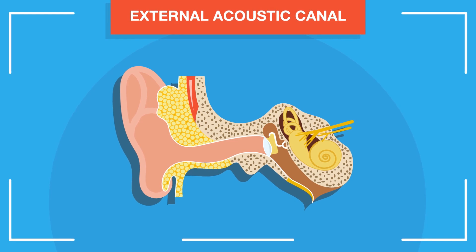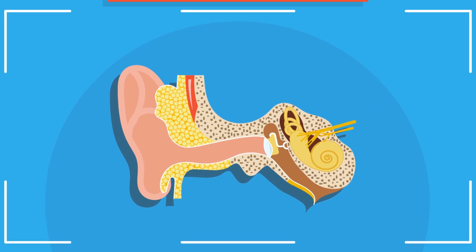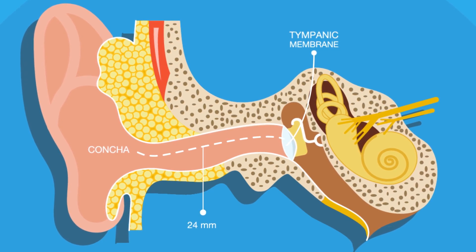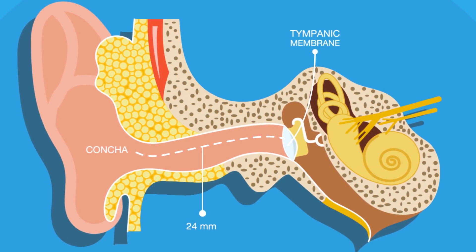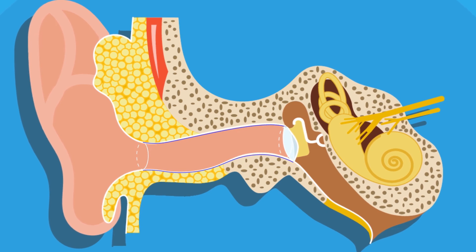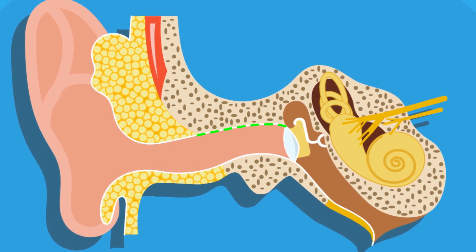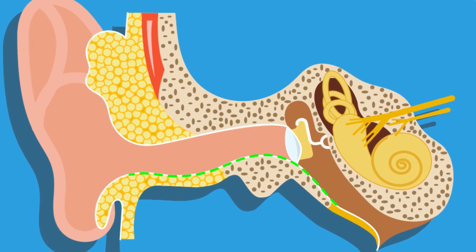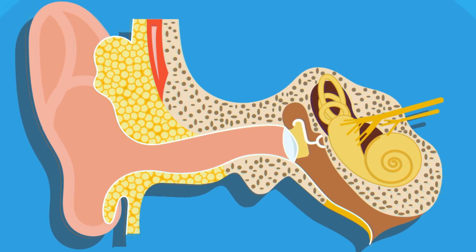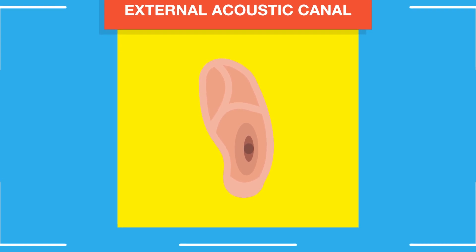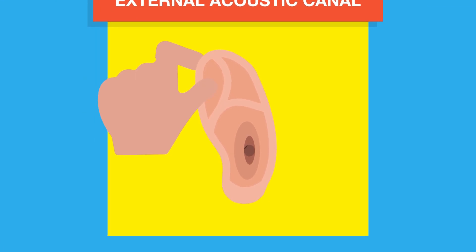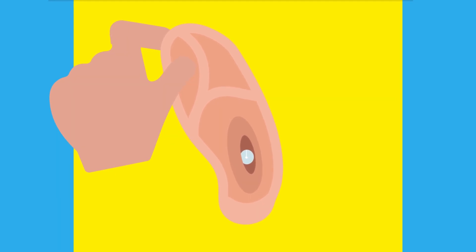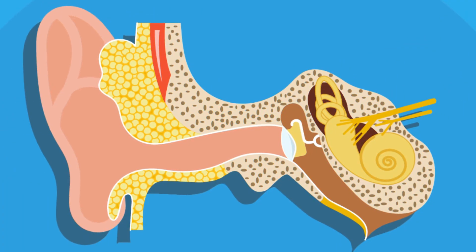The external acoustic auditory canal extends from the bottom of the concha to the tympanic membrane, and measures about 24 mm along its posterior wall. It is not a straight tube. Its outer part is directed upwards, backwards, and medially, while its inner part is directed downwards, forwards, and medially. Therefore, to see the tympanic membrane, the pinna has to be pulled upwards, backwards, and laterally, so as to bring the two parts into alignment.